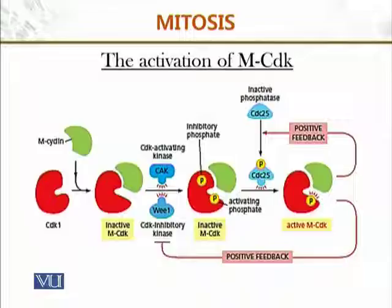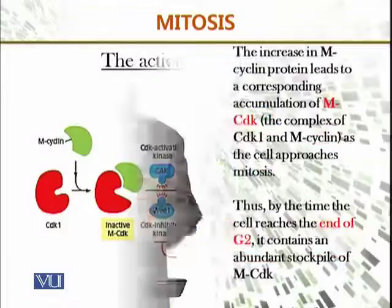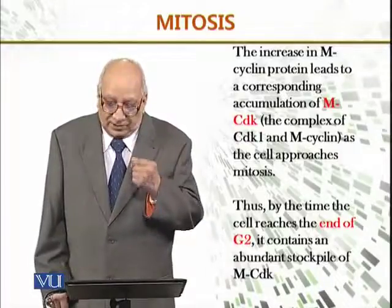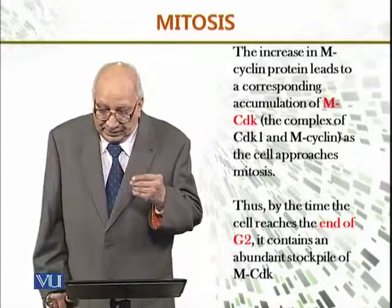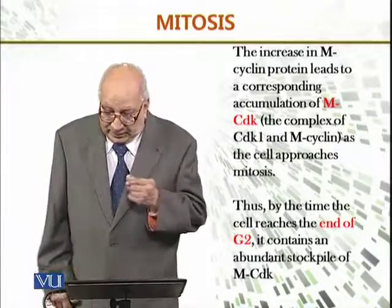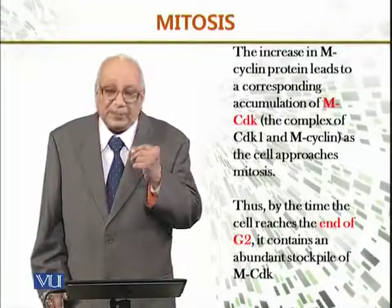Here, CDK1 — the inactive MCDK — joins with M-cyclin and becomes activated. The CDK inhibitor kinase affects this process, and there is a positive feedback that transmits signals to the cell that it should divide, forming active MCDK and making mitosis possible. The increase in M-cyclin protein leads to a corresponding accumulation of MCDK — the complex of CDK1 and M-cyclin — as the cell approaches mitosis. By the time the cell reaches the end of G2, it contains an abundant stockpile of MCDK.